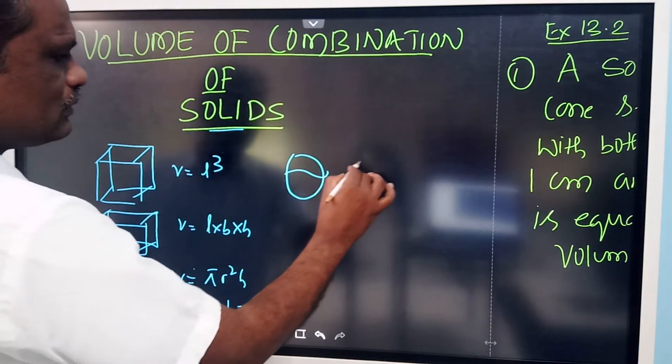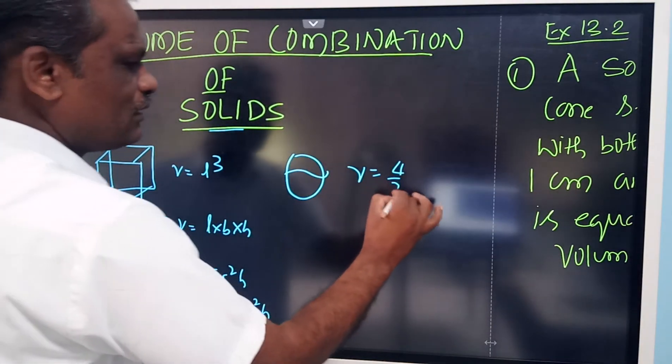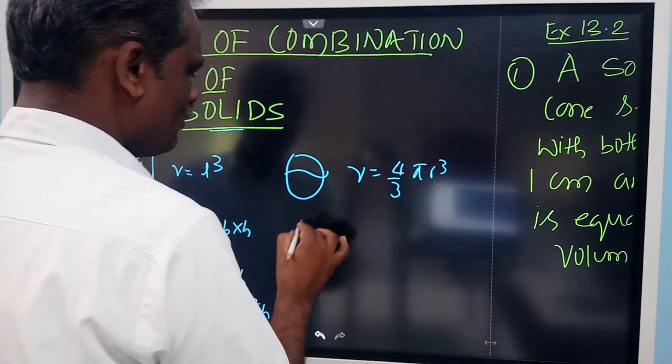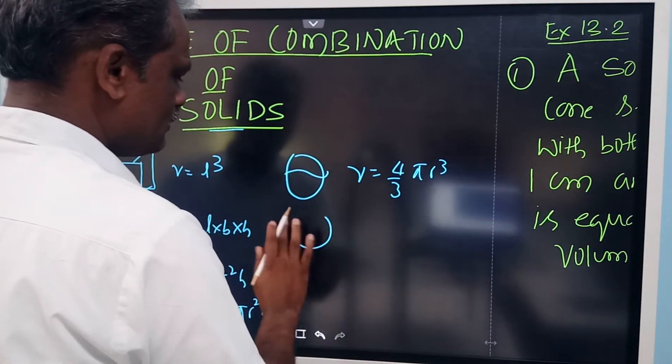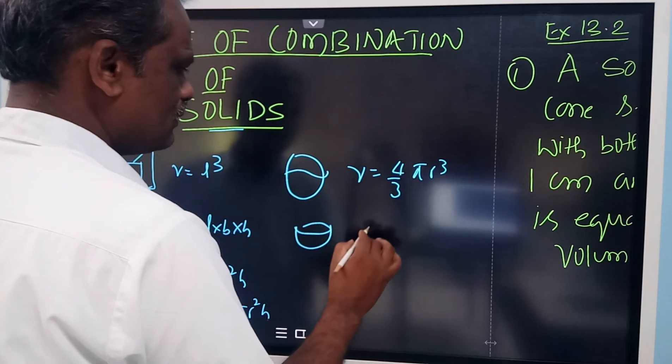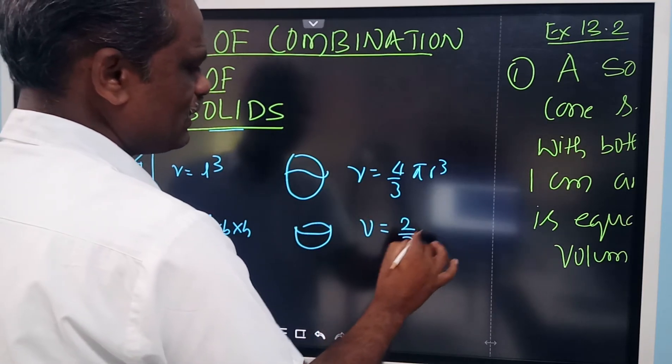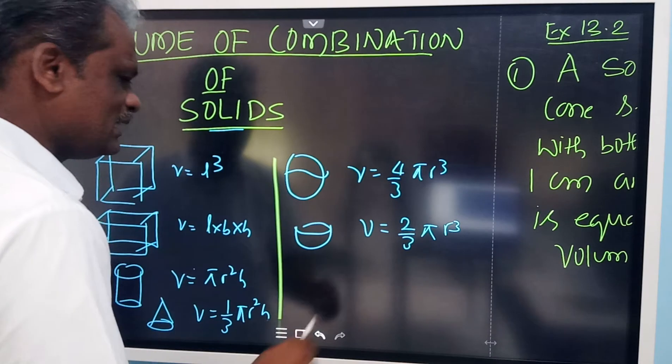Volume of sphere is (4/3)πR³. Volume of hemisphere is (2/3)πR³, half of the sphere. So you remember these things.